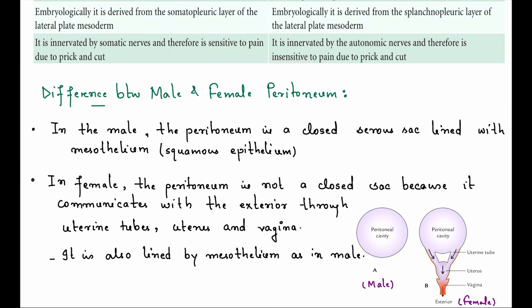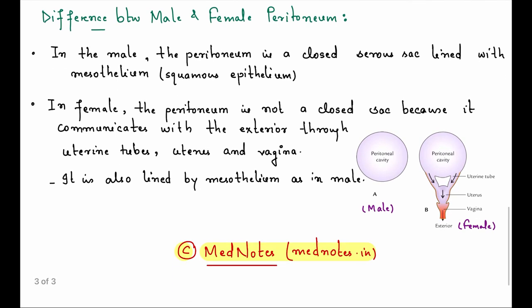Difference between male peritoneum and female peritoneum. In the male, the peritoneum is a closed serous sac lined with mesothelium. In female, the peritoneum is not a closed sac because it communicates with the exterior through uterine tubes, uterus, and vagina. It is also lined by mesothelium.